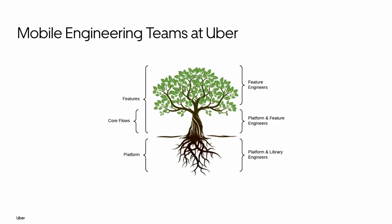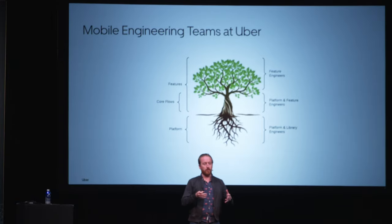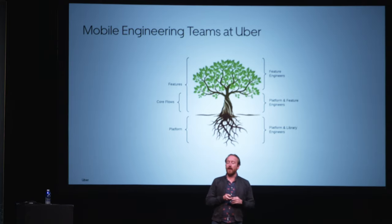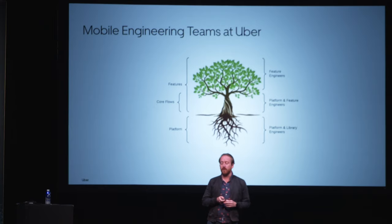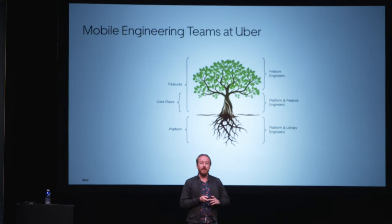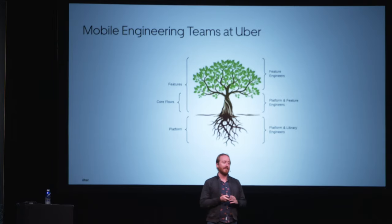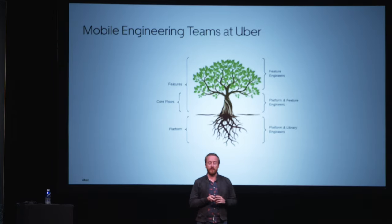At Uber there are typically three types of teams. You have your feature engineers, which are on cross-functional teams working on the end product — working on a specific feature in the Rider app or the Eats app. Within those orgs, we have platform teams that serve a product platform role, owning some of the core flows or core features as well as the architectural and library needs. Like there's a Rider platform team and a Driver platform team. And then we have core infrastructure platform engineers and pure library engineers — this is where I live. These folks' customer at the end of the day is entirely other developers, either internally or through our open source projects.